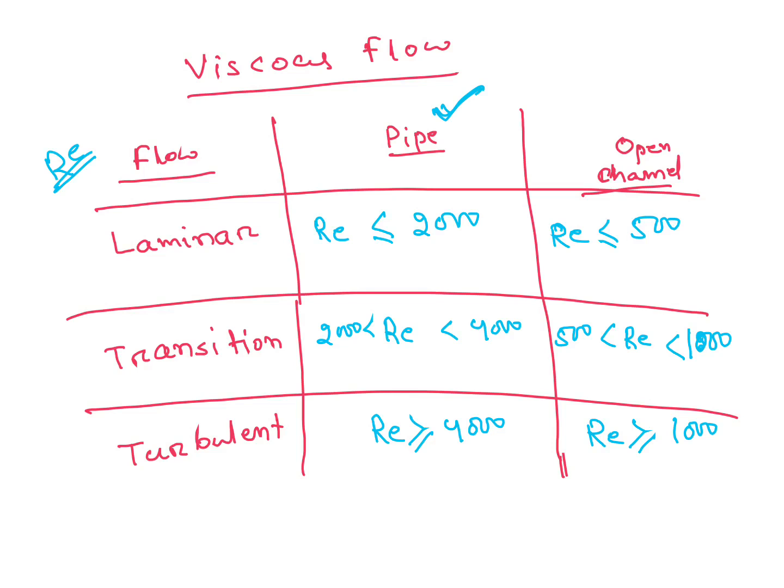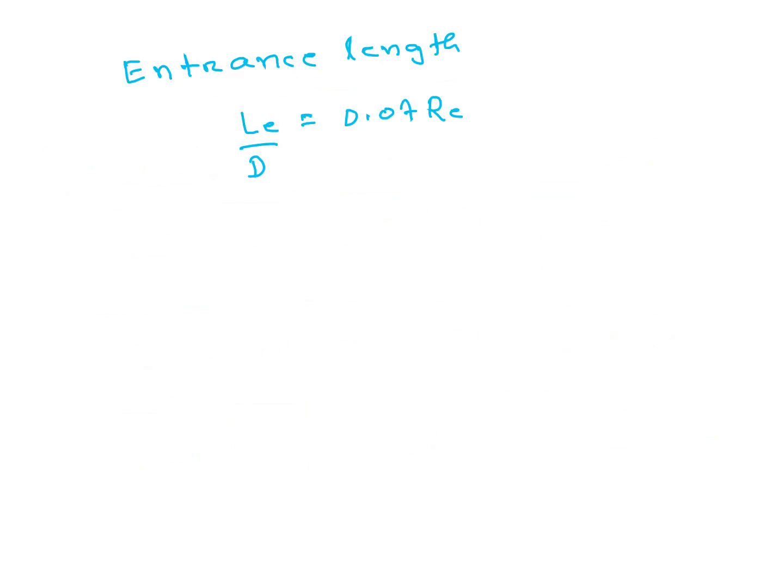For pipe flow, entrance length also they may ask. For laminar flow, hydrodynamic entrance length is Le/D = 0.07 × Reynolds number. For Reynolds number, formula is ρVD/μ or in kinematic viscosity term V × D/ν. D is characteristic dimension, it is 4 × wetted area divided by wetted perimeter, 4A/P. This is also important.